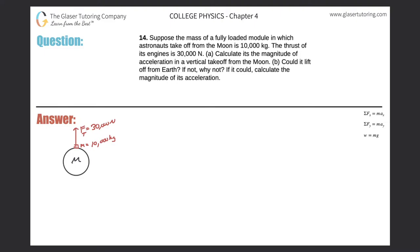Number 14: suppose the mass of a fully loaded module in which astronauts take off from the moon is 10,000 kilograms. The thrust of its engines is 30,000 newtons. Calculate the magnitude of the acceleration in a vertical takeoff from the moon. So here I have a little picture — the moon is in black — and the thrust from the engines is 30,000 newtons, and the mass of the spaceship is 10,000 kilograms.